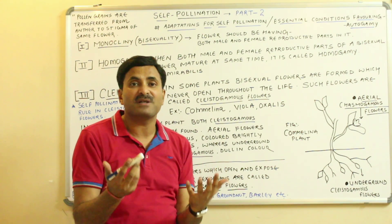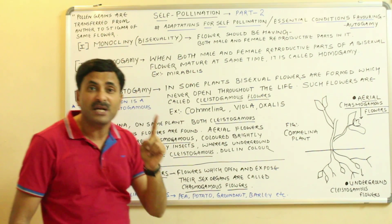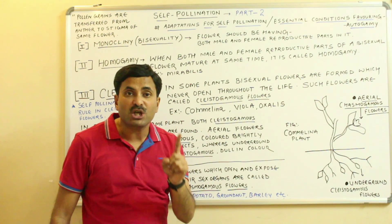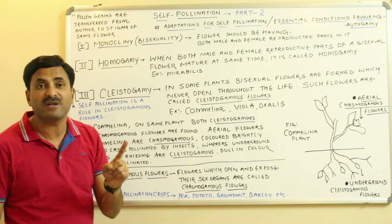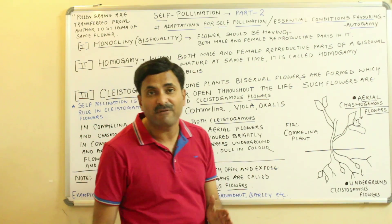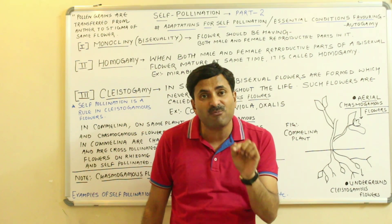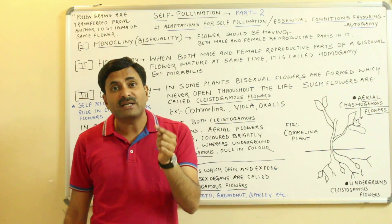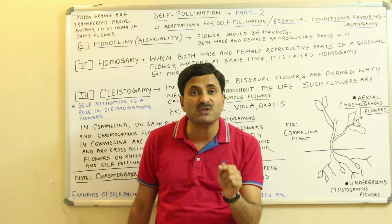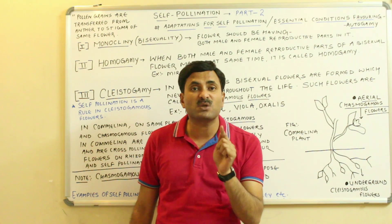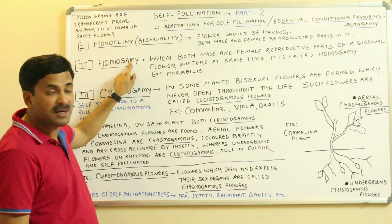The second condition is known as homogamy. Homogamy is when both the male and female reproductive parts of a bisexual flower mature at the same time. Homogamy also favors self-pollination. If in a bisexual flower the male and female reproductive organs mature at different times, then instead of self-pollination, cross-pollination will occur. So it is quite necessary for self-pollination that both parts mature at the same time.